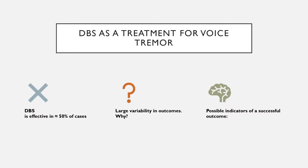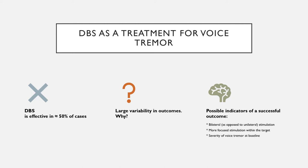How does DBS help patients with voice tremor? The overall results so far suggest that DBS can be effective in about 50% of cases, but there is large variability in outcomes. There are some factors that have been highlighted as indicators of treatment success: bilateral stimulation as opposed to unilateral, more focused and precise stimulation within the DBS target, severity of voice tremor at baseline, and that DBS may be more successful on voice tremor in younger patients.